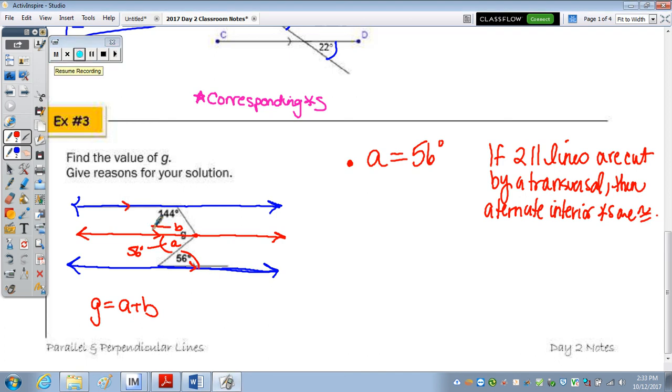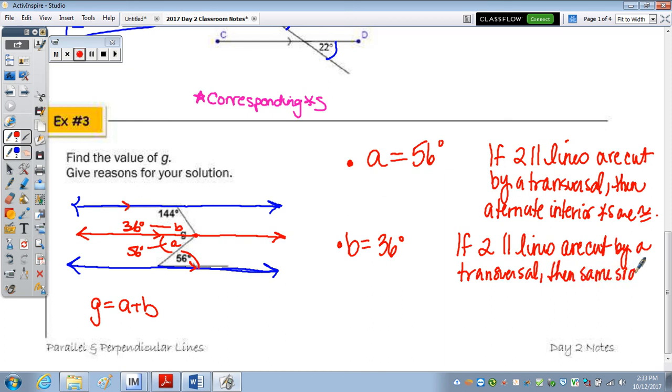And then how do you find B? What's B equivalent to? 180 minus 144, which is 36 degrees. So B is equal to 36 degrees, because if two parallel lines are cut by a transversal, then same side interior angles are supplementary.